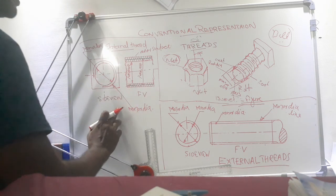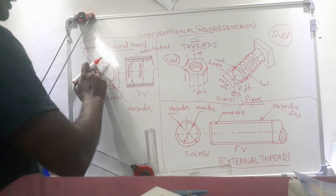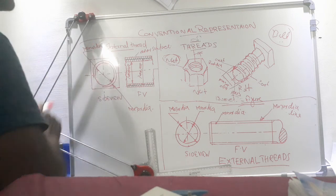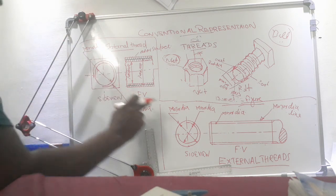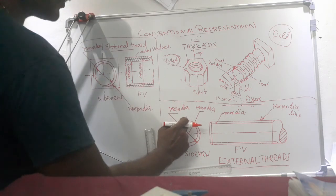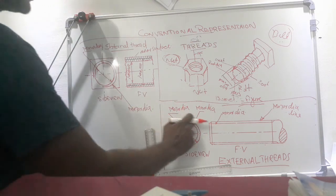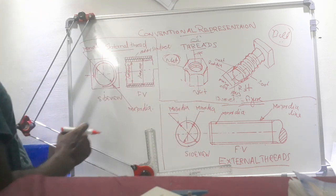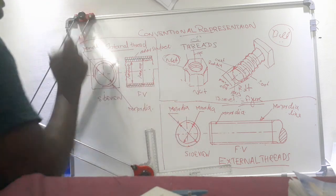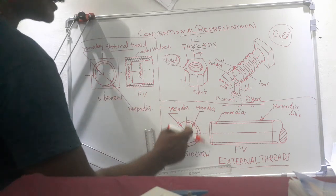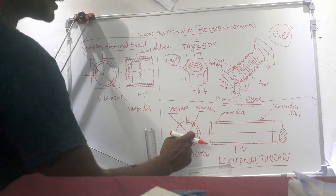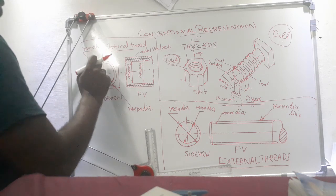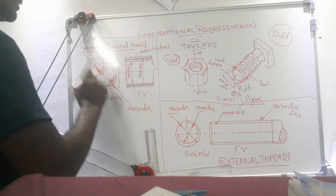While representing internal threads in the side view, one of the circles should be a 3/4 circle. This is the symbol for conventional representation of internal thread. In the case of external thread, the 3/4 circle is inside the full circle. The main difference is: in external thread, out of two circles, the innermost circle is the 3/4 circle, whereas in the case of internal thread, the outer circle is the 3/4 circle.